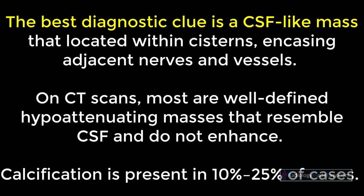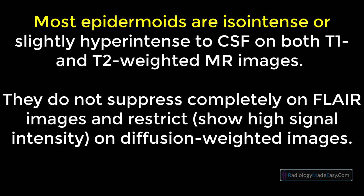The best diagnostic clue is a CSF-like mass located within cisterns that encases adjacent nerves and vessels. On CT scans, most are well-defined hypoattenuating masses that resemble CSF and do not enhance. Calcification is present in 10% to 25% of cases.